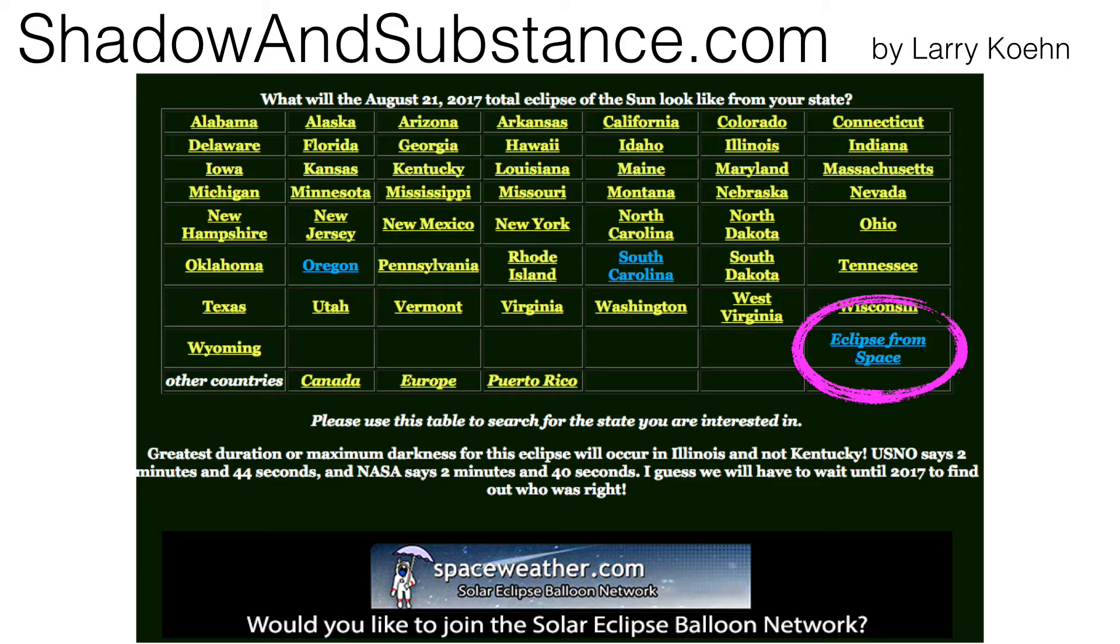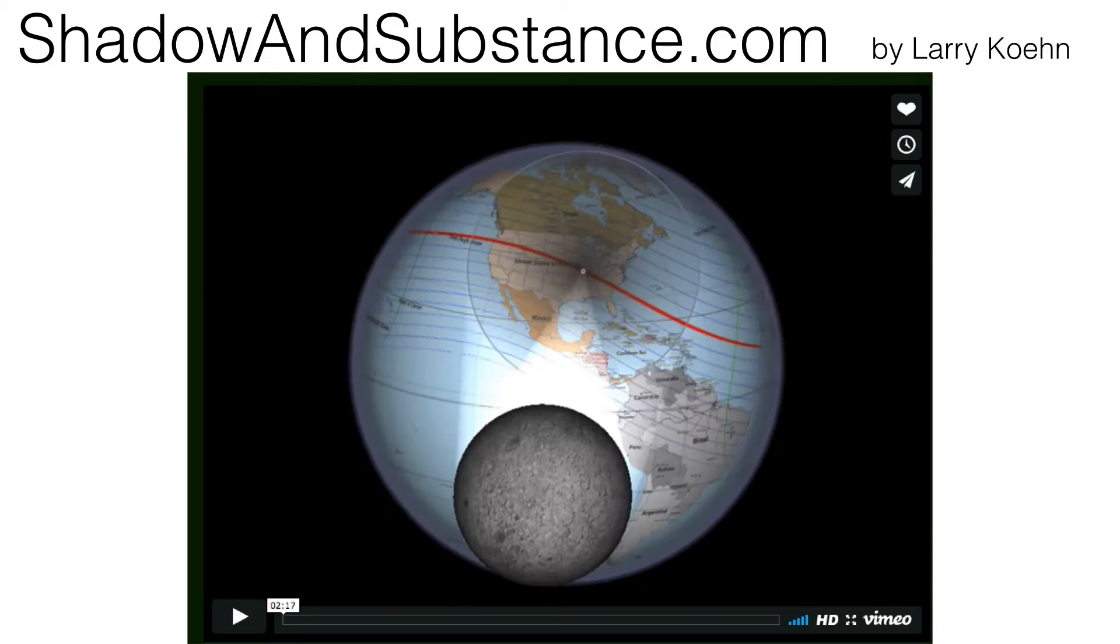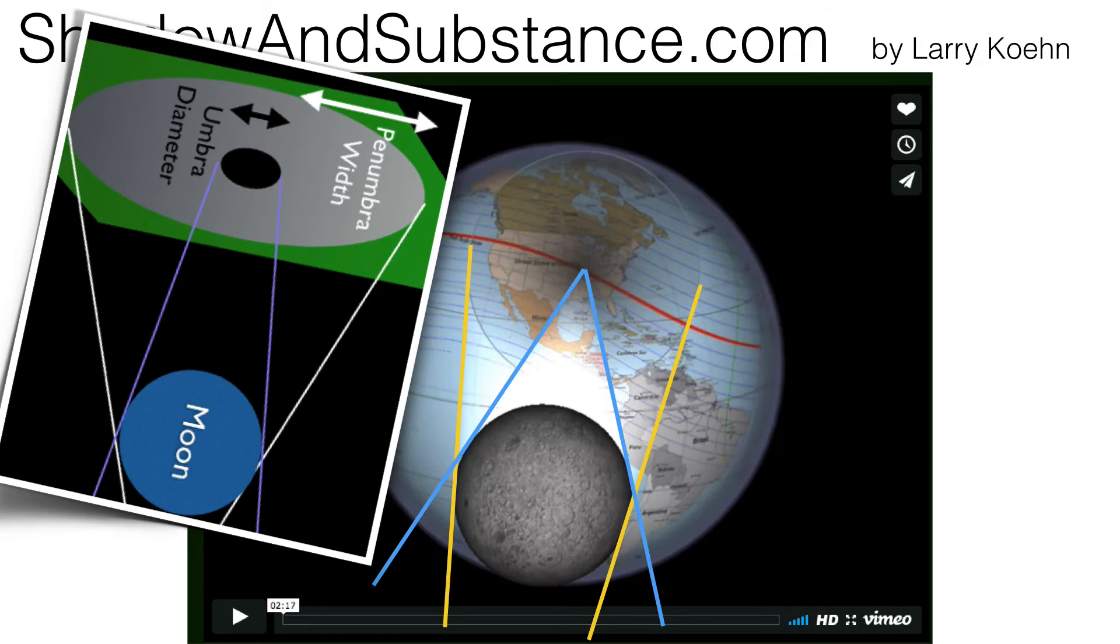One of my favorite visualizations is the one that he did from space. This is taken from so many million miles away such that you're sort of looking over the shoulder of the moon. But if you take a look, there's the umbra and the penumbra diagram that we've seen.